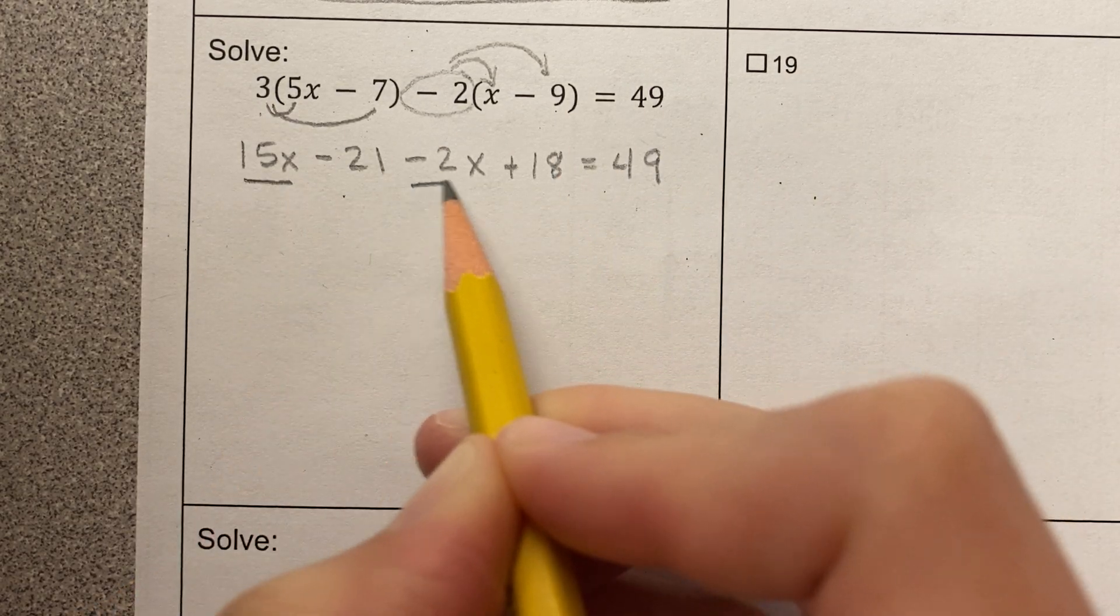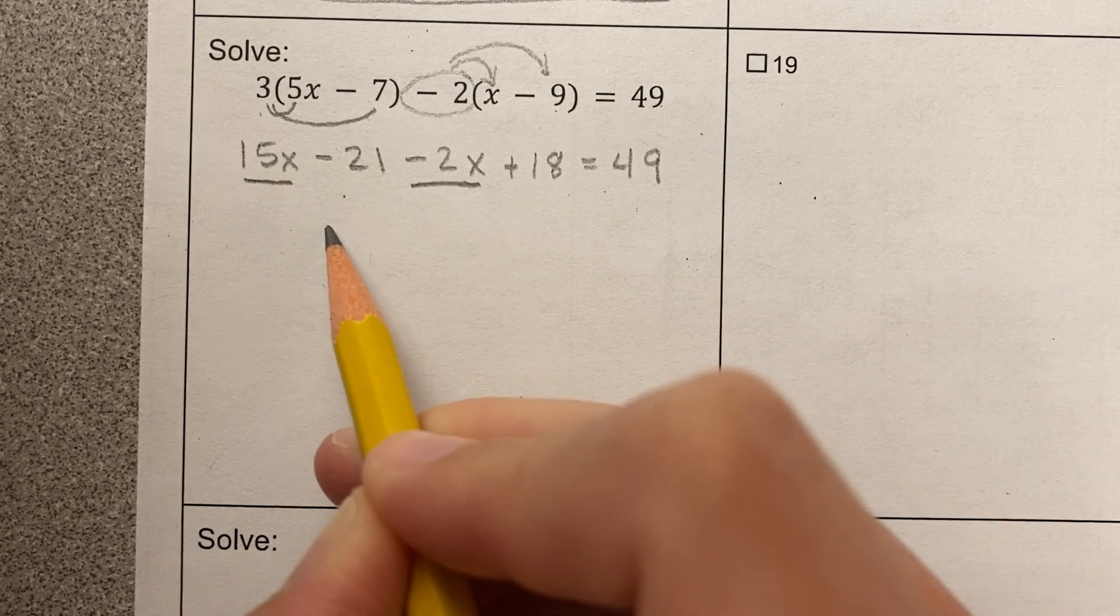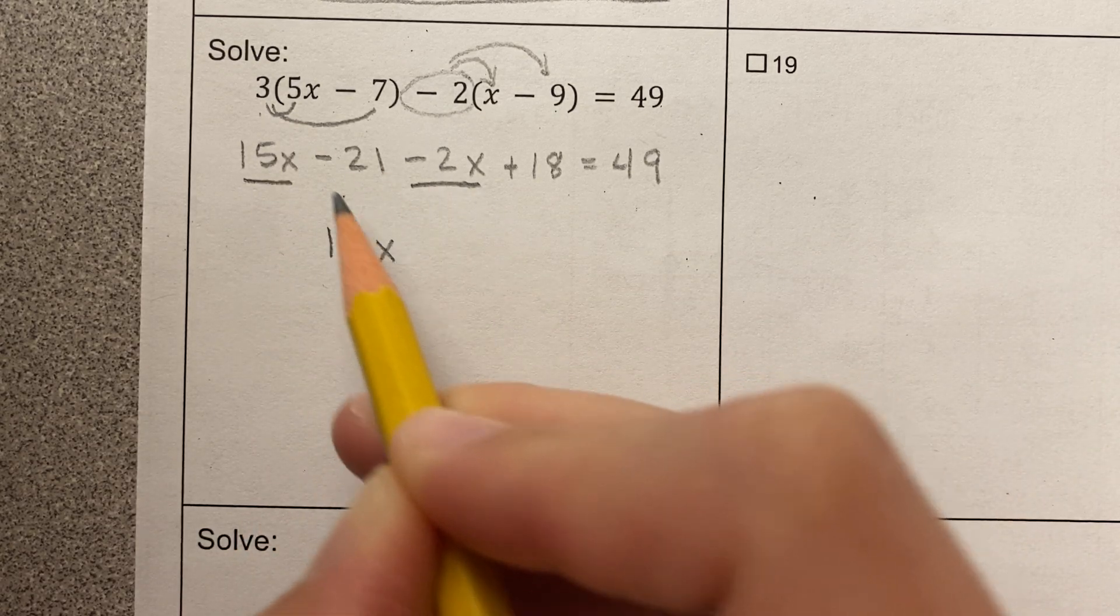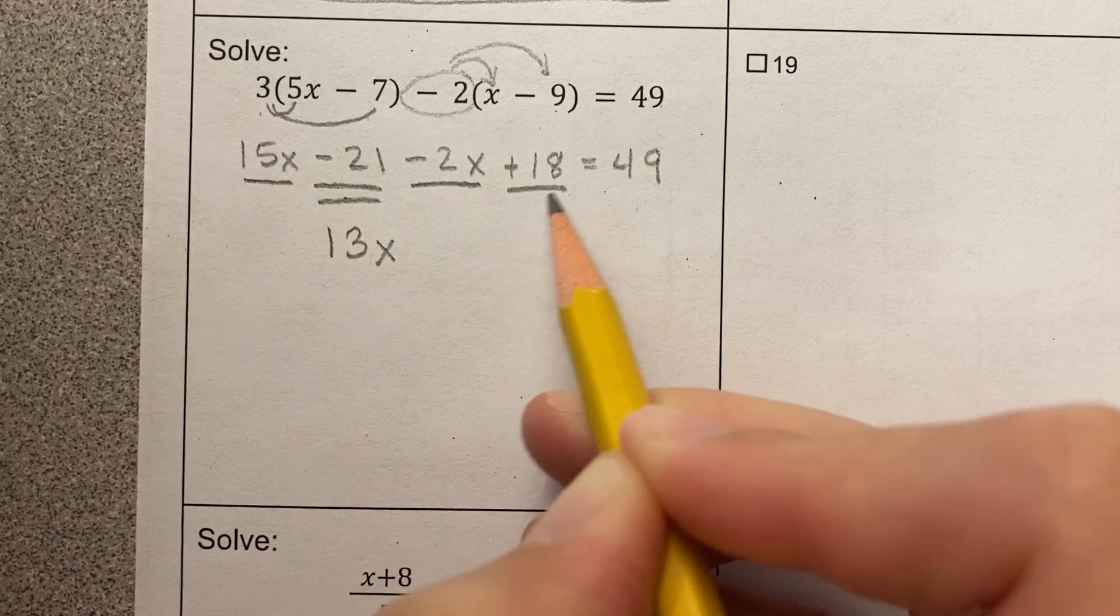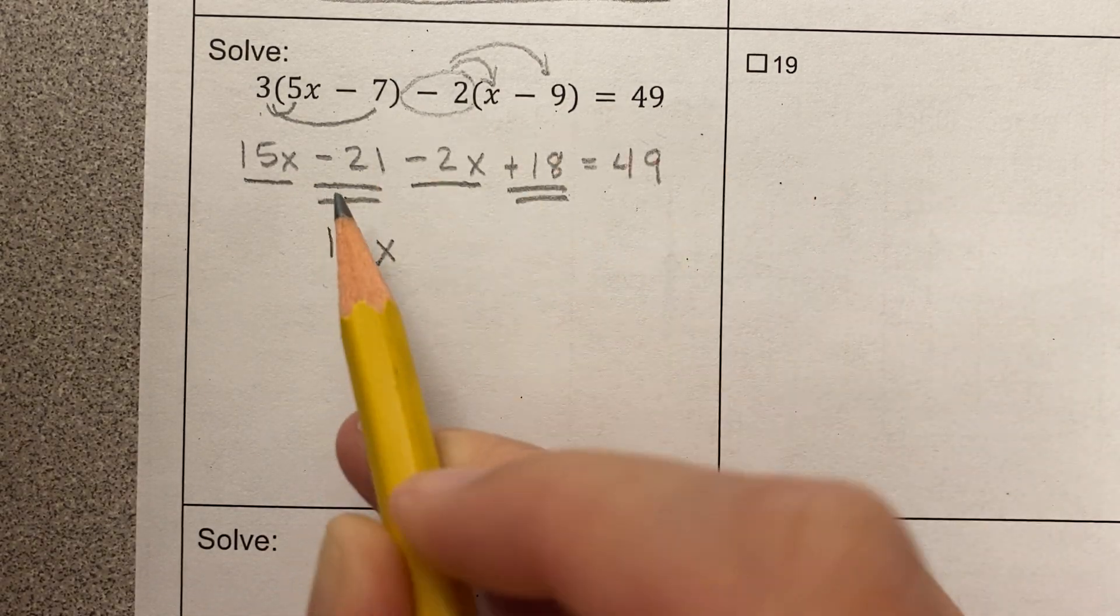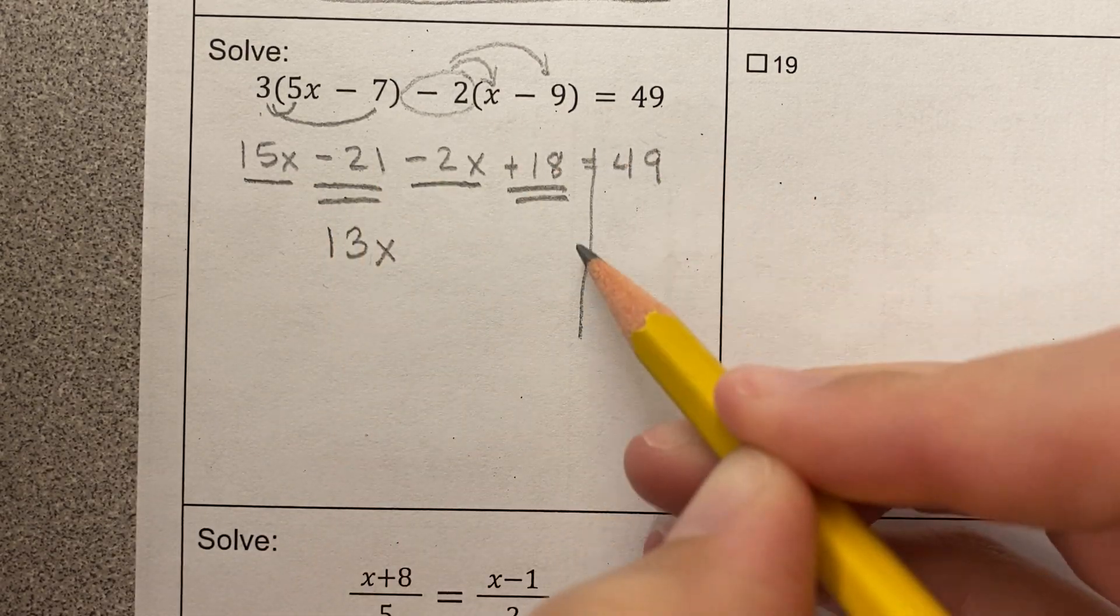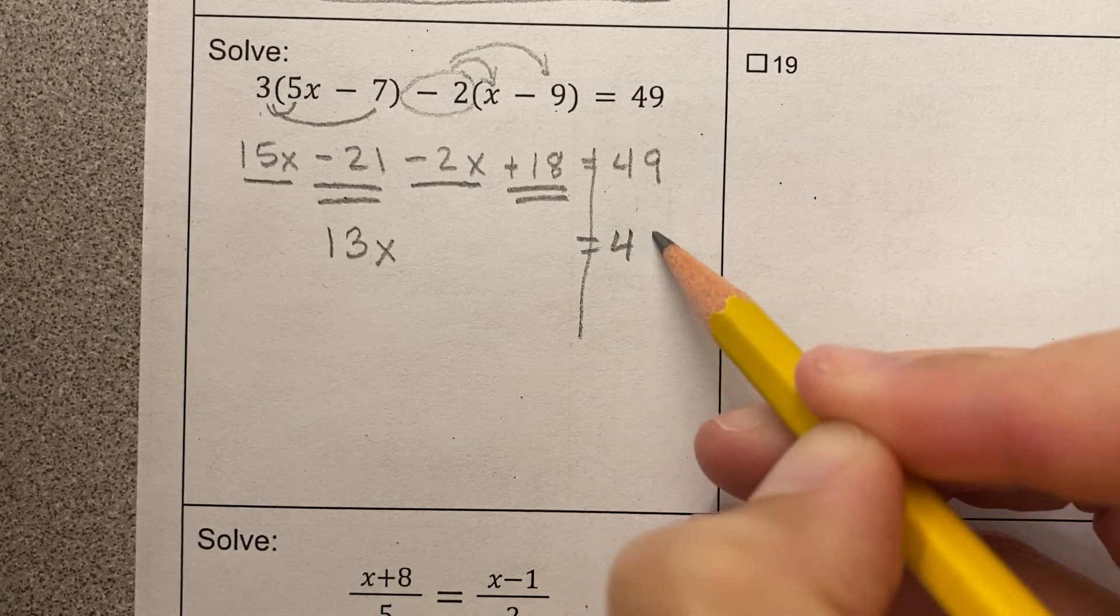Now I'm combining like terms, these are like terms. 15x minus 2x is 13x. This is negative 21 plus 18. Notice I'm not combining like terms across the equal sign, that 49 is just going to stay over here.